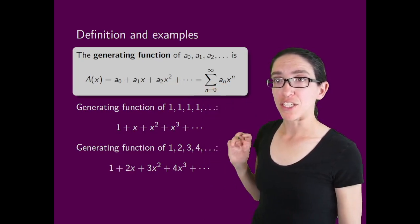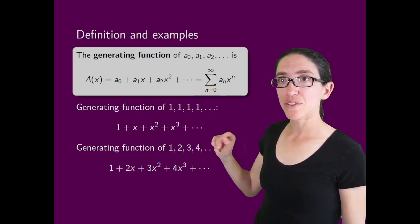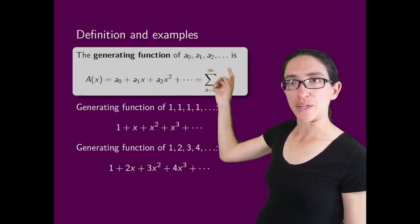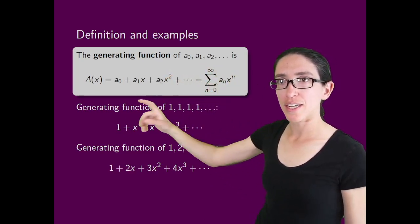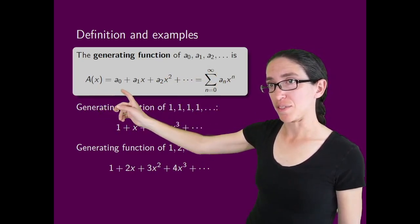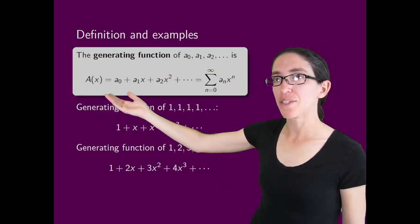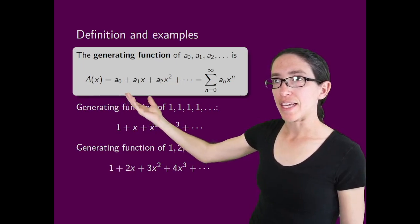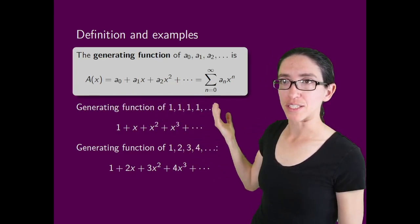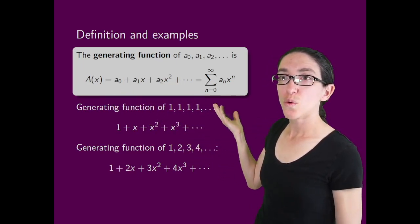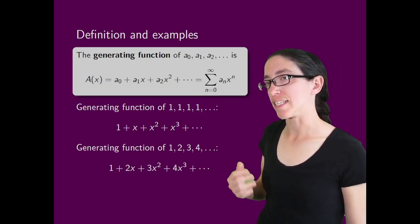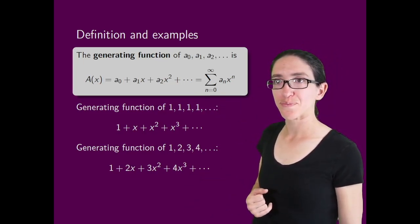Here's the official definition and some examples. The generating function of an infinite sequence a0, a1, a2, ... is — we often write A of x, if it's a lowercase a sequence, that's just convention — and it's a0 plus a1x plus a2x squared plus ..., or the sum as n goes from 0 to infinity of a sub n times x to the n.